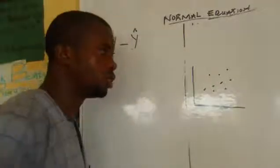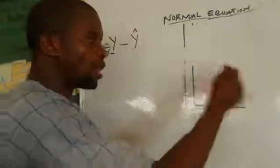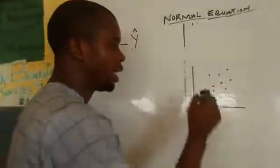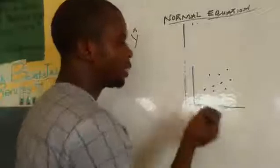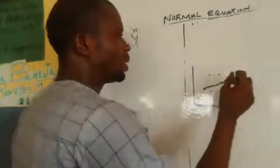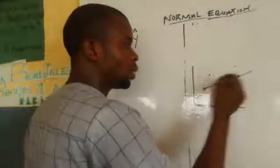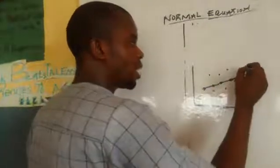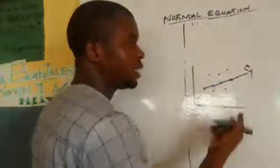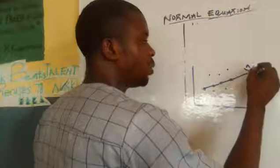Look at what I have on the board here. These are the observed values I've gathered. From these observed values I can make a line — that is my regression line. From the regression line I can write the estimated value, and I put the estimation sign here.